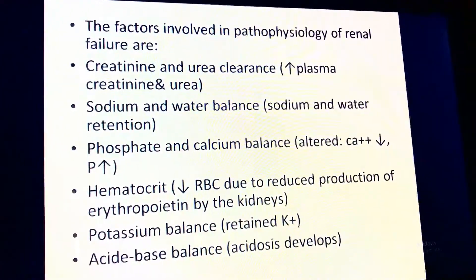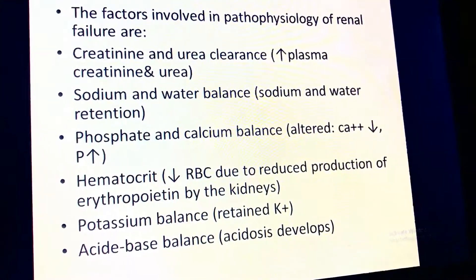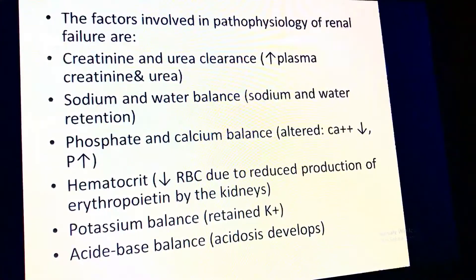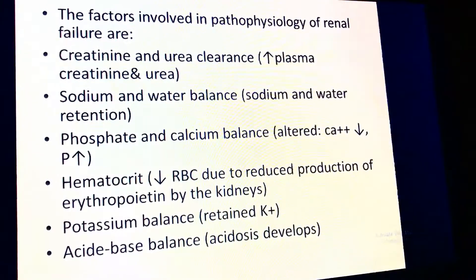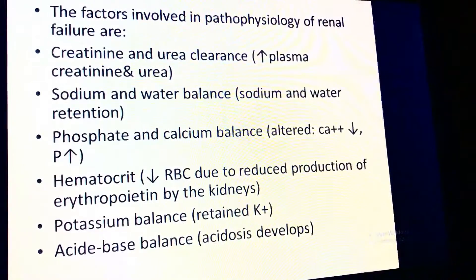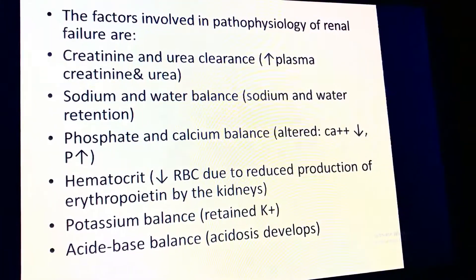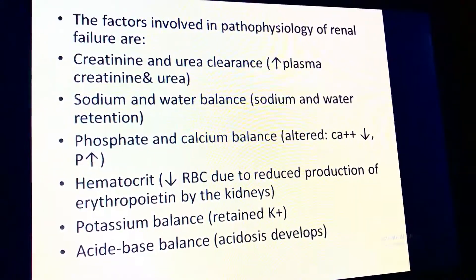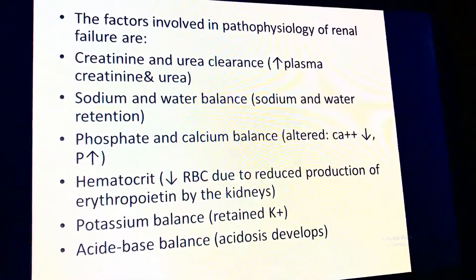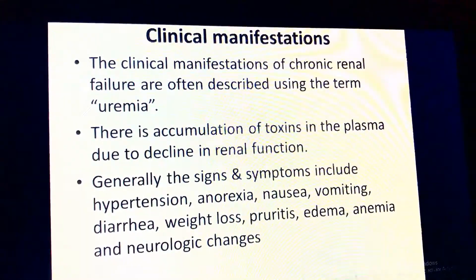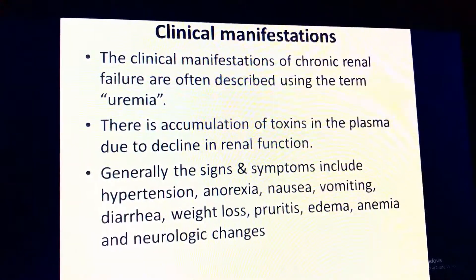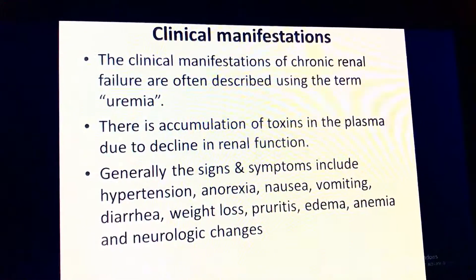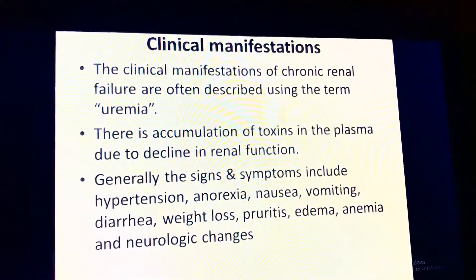The clinical manifestations of chronic renal failure are often described using the term uremia — increase of urea in the blood. There is accumulation of toxins in the plasma due to decreased renal function. Signs and symptoms include hypertension, anorexia, nausea, vomiting, diarrhea, and weight loss.